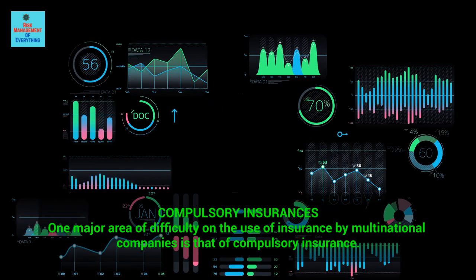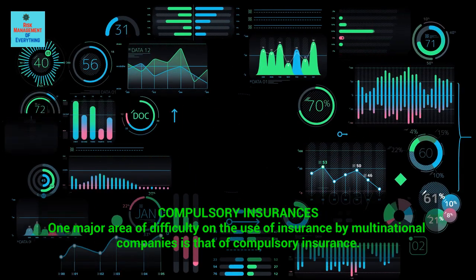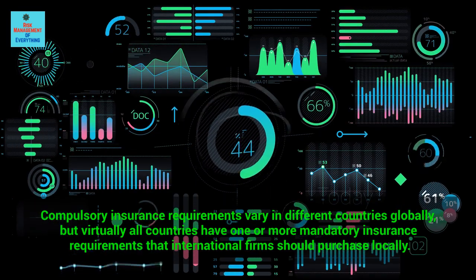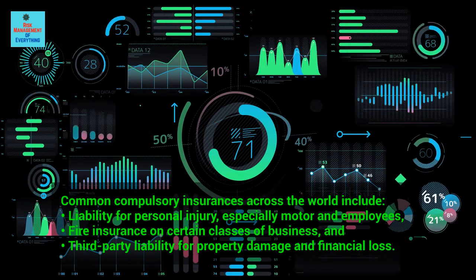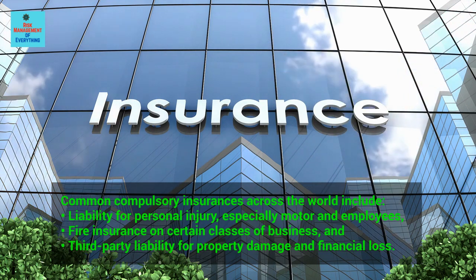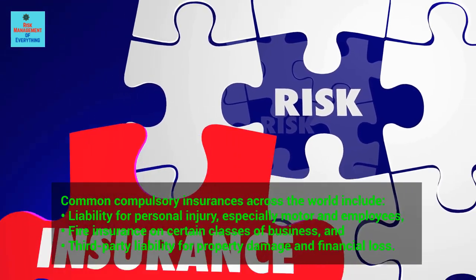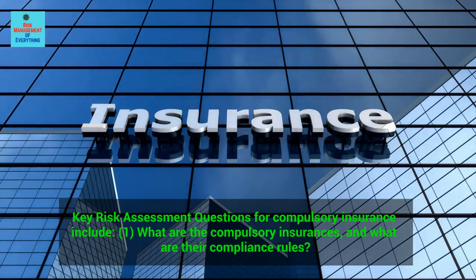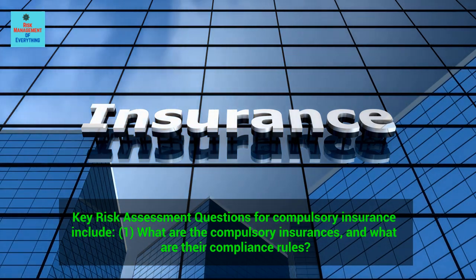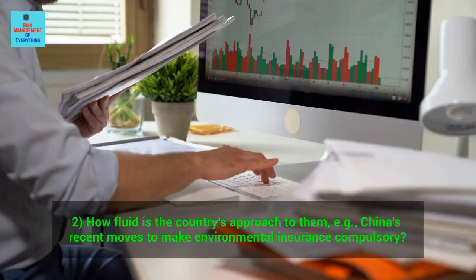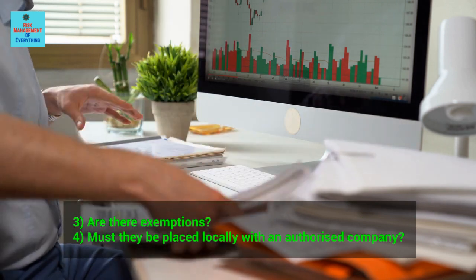Compulsory insurances: One major area of difficulty on the use of insurance by multinational companies is compulsory insurance. Compulsory insurance requirements vary in different countries globally, but virtually all countries have one or more mandatory insurance requirements that international firms should purchase locally. Common compulsory insurances across the world include: liability for personal injury (especially motor and employees), fire insurance on certain classes of business, and third-party liability for property damage and financial loss. Key risk assessment questions for compulsory insurance include: what are the compulsory insurances and their compliance rules? How fluid is the country's approach — for example, China's recent moves to make environmental insurance compulsory? Are there exemptions? Must they be placed locally with an authorized company?